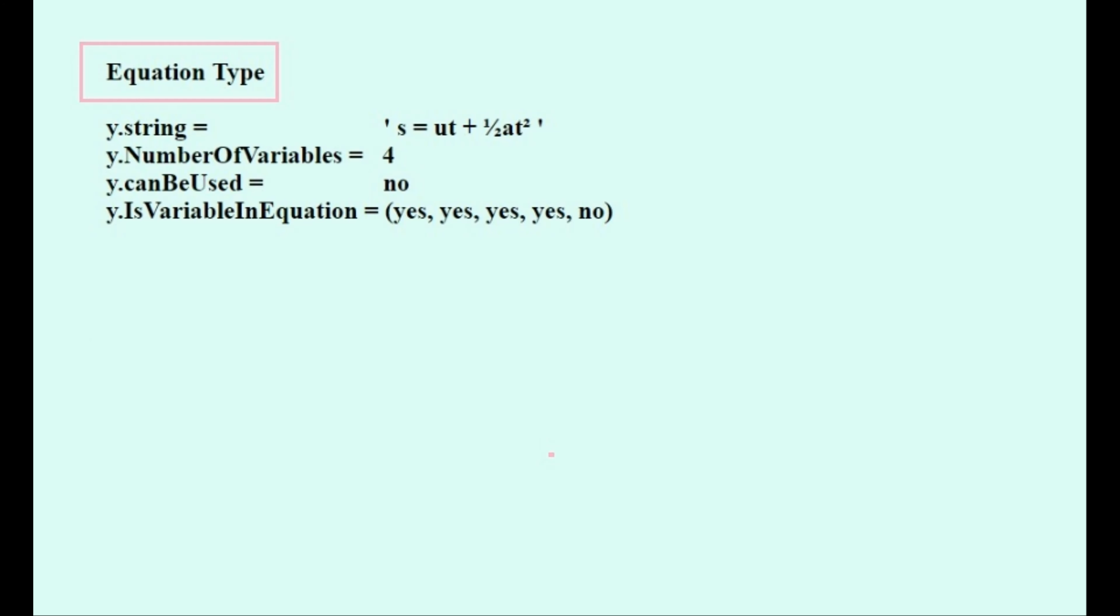And the last attribute is a list of yes and no's that corresponds to whether a particular variable is in the equation or not. For example, the first value on the list corresponds to the variable S and is set to yes because S can be found in the equation.